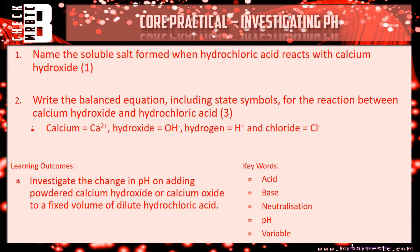So let's have a look at question one: name the soluble salt formed when hydrochloric acid reacts with calcium hydroxide. You take the name of the metal, which is calcium, and the hydrochloric acid forms a chloride, so you get calcium chloride — which gets you one mark.